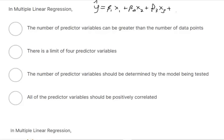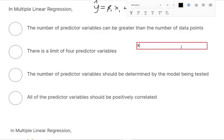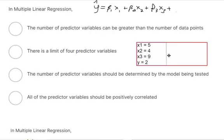So let's say we've got a data set that looks like this. Okay, so you've got x sub 1 equals 5, x sub 2 equals 4, x sub 3 equals 9. And then you've got y equals 2. You're trying to predict for some y value.